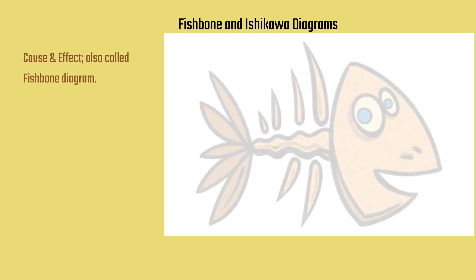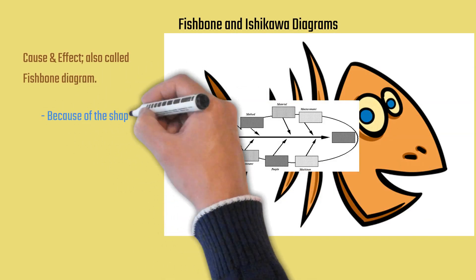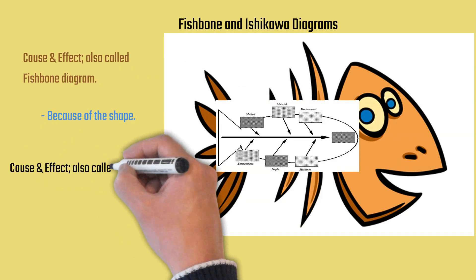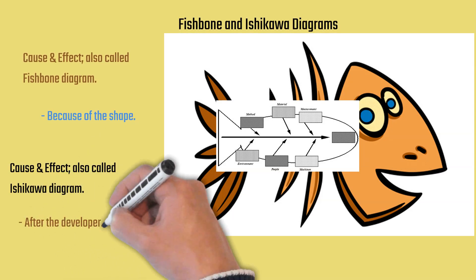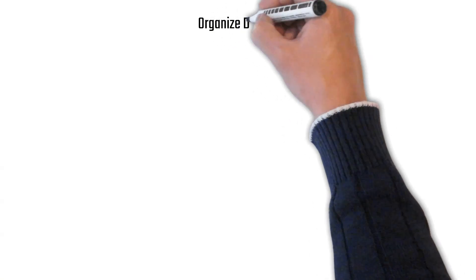Now, cause and effect diagrams have two other names. One is called a fishbone diagram because when they're complete, they kind of look like a fish. It's the shape. They are also named after their creator, Ishikawa diagrams. So you'll hear cause and effect diagrams called fishbone or Ishikawa diagrams.